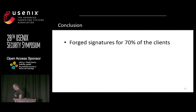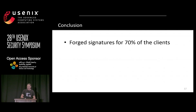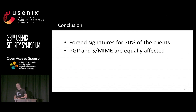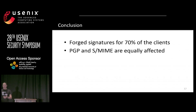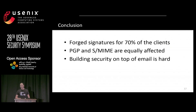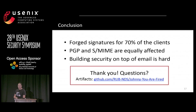In conclusion, we were able to forge signatures — achieving perfect or partial forgery — on 70% of the tested email clients, including major clients like Outlook, Apple Mail, and Thunderbird. PGP and S/MIME were equally affected. We targeted both the underlying signature data formats and standard email features like HTML email and the missing binding of the signer's address to the sender's address. This raises the question of whether it's even possible to build security on top of email. We reported all issues to affected vendors, and all test cases are available on GitHub.